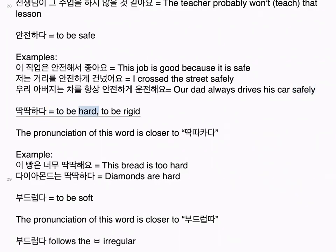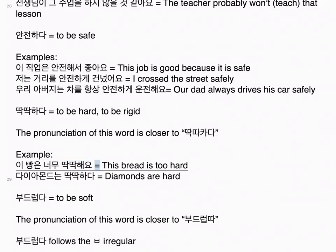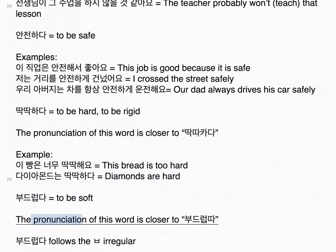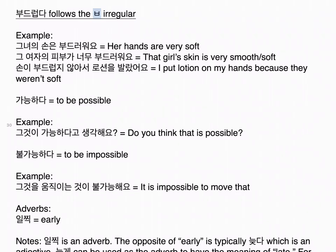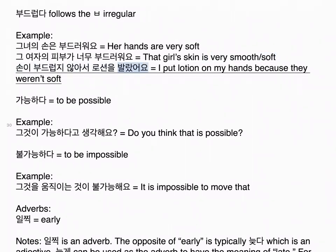딱딱하다 means to be hard or rigid. 부드럽다 means to be smooth or soft. Examples: That girl's skin is very smooth. 손이 부드럽지 않아서 로션을 발랐어요. I put lotion on my hands because they weren't soft.